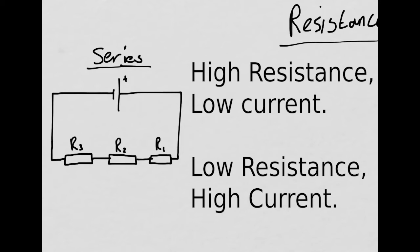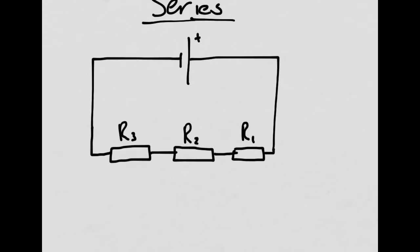If you've got a high resistance in a circuit, then you're going to have a low current. Now let's take this circuit for example — this is a series circuit with three resistors in series: R1, R2, R3. The current is going to flow through R1, then R2, then R3, one after the other, in series.